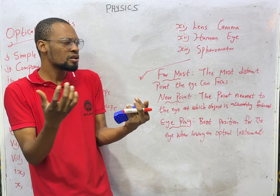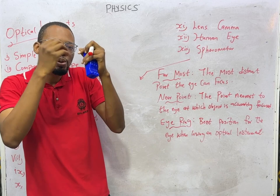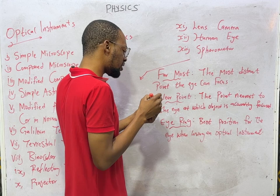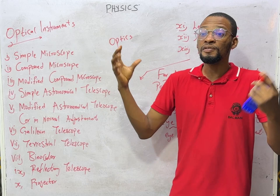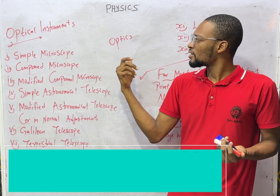Now, let us study the lights visible to the eyes. The branch of physics, or the study of lights that are visible, perceivable to the human eye, is referred to as optics. So every time you see the word optics, it has to do with visible lights, or lights that are visible to the eye — light that the eyes can see.